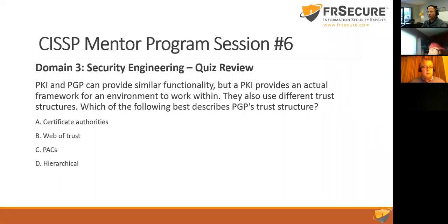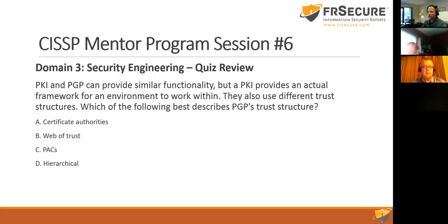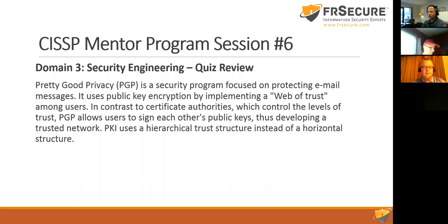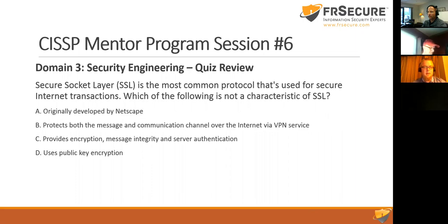Question two: PKI and PGP provide similar functionality but use different trust structures. The question asks which best describes PGP's trust structure. Options are certificate authorities, web of trust, PEKS, or hierarchical. PGP — Pretty Good Privacy, created by Phil Zimmerman — is based on the web of trust, so B is correct.